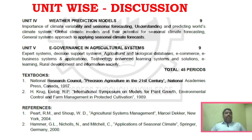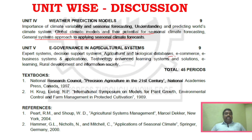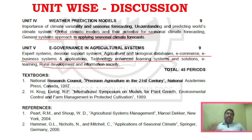Unit 4 covers the general system approach, applying seasonal climate forecasts, global climatic change, and understanding and predicting the world climate system — three key areas. Unit 5 covers e-commerce, e-business systems, e-business models, technology enhanced learning systems, and rural development information society — again, three key areas.